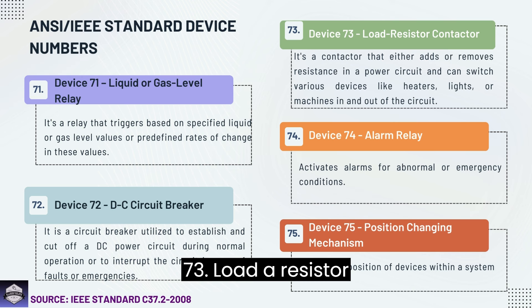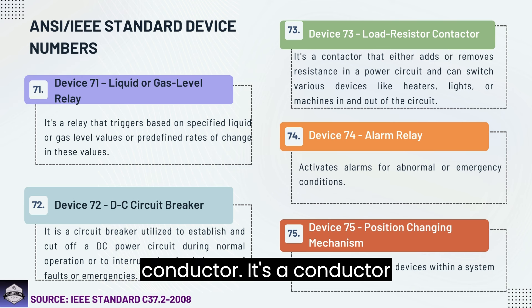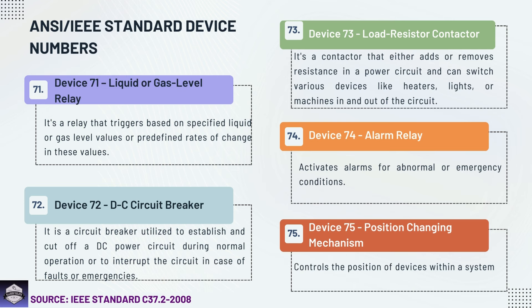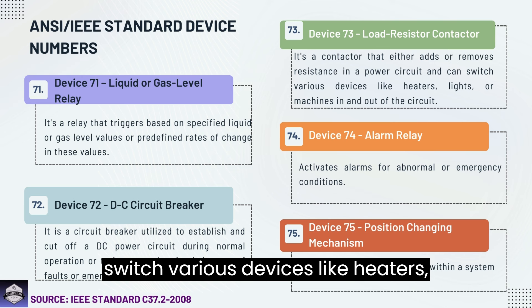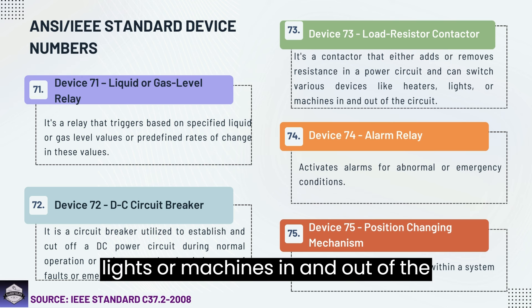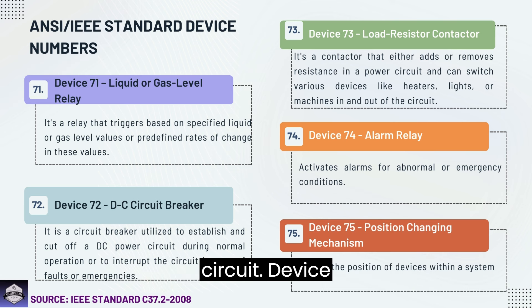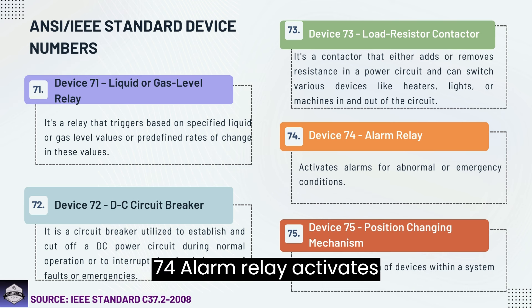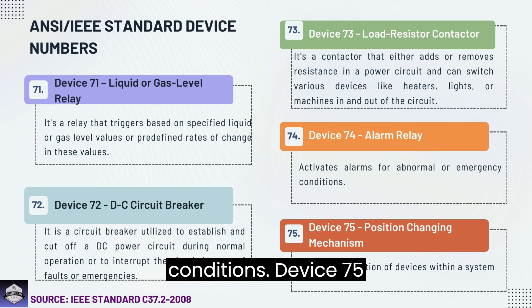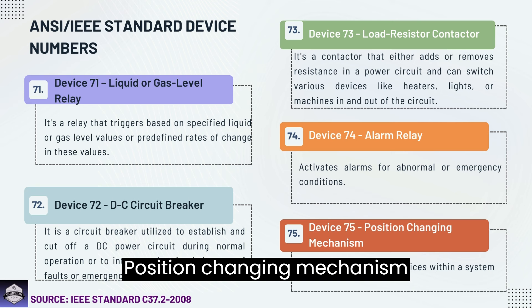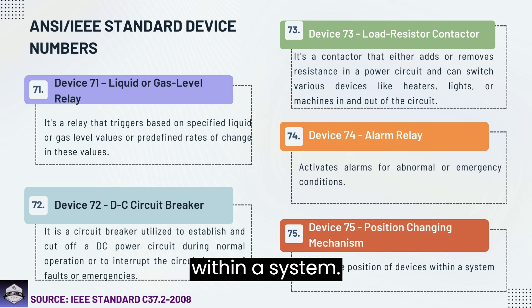Device 73: Load resistor contactor — a contactor that either adds or removes resistance in a power circuit, and can switch various devices like heaters, lights, or machines in and out of the circuit. Device 74: Alarm relay — activates alarms for abnormal or emergency conditions. Device 75: Position changing mechanism — controls the position of devices within a system.